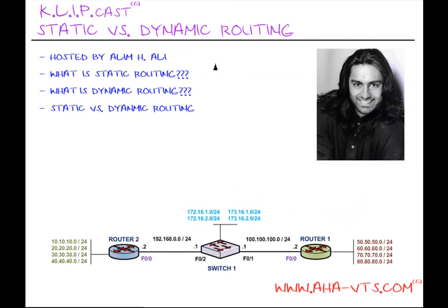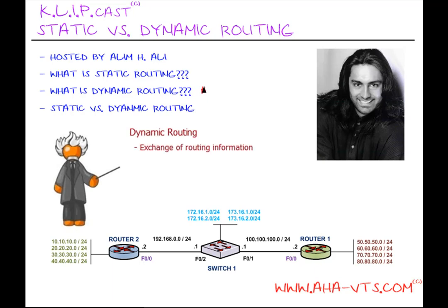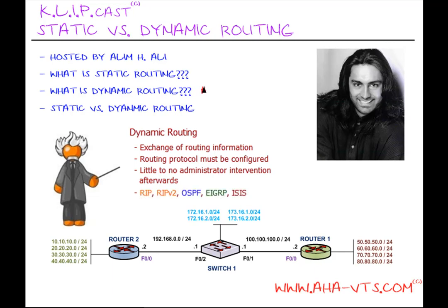In some respects, the inverse of static routing is dynamic routing. Dynamic routing involves the exchange of routing information via periodic updates and/or responses to changes on the network. A routing protocol is what is configured on a router to start such a process, and after configuring the routing protocol, there is little or no administration afterwards. There are a few routing protocols used on networks such as RIP, RIPv2, OSPF, EIGRP, and ISIS, with OSPF and EIGRP being the most popular.